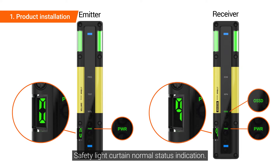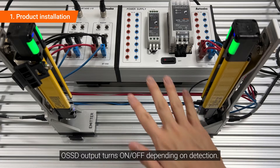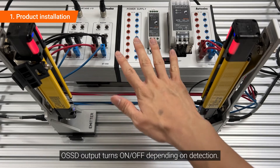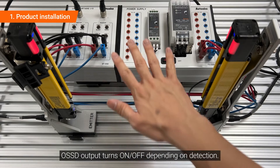This is the safety light curtain normal status indication. The OSSD output turns on and off depending on detection.